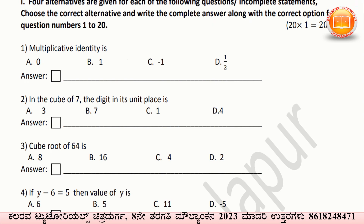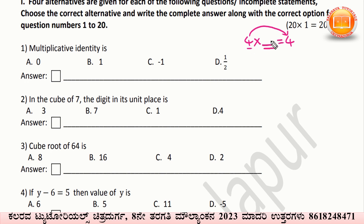Now we have to solve: the multiplicative identity is. The multiplicative identity means when we multiply any number, if you multiply any number by 1, that gives you the same answer. For what number we have to multiply to get the same answer? That is 1. Therefore, 1 is called the multiplicative identity. Option B is the correct answer.